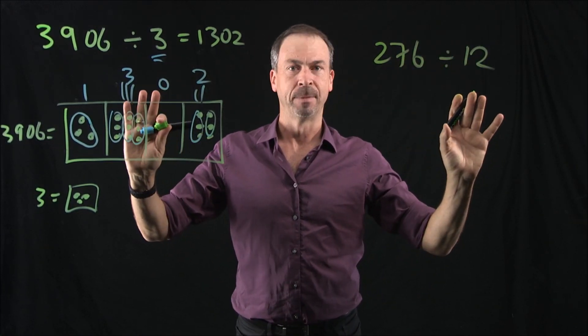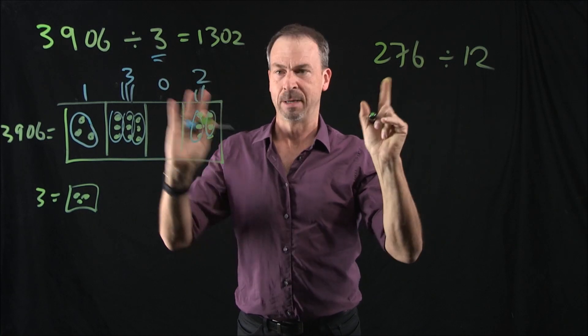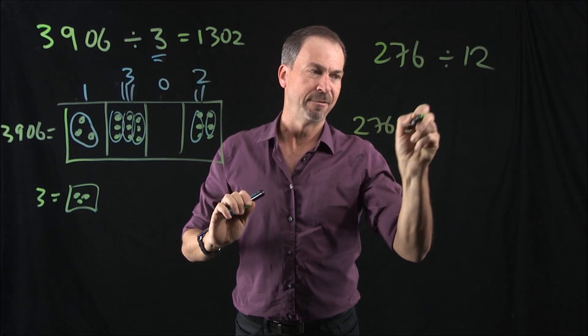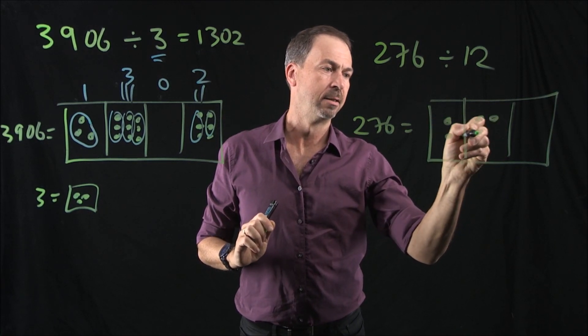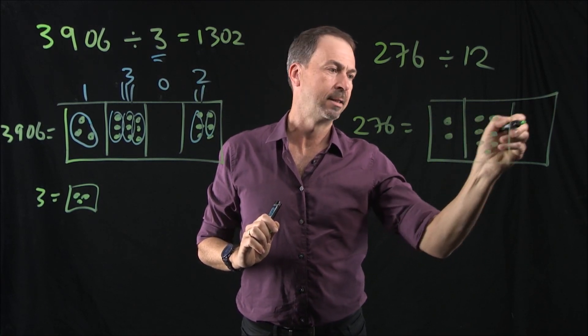Let's make this a little more complicated. Now, 12 is going to be interesting for us, but let me show you. 276 is fine. We can definitely draw a picture of that. It is two dots, seven dots, and six dots.